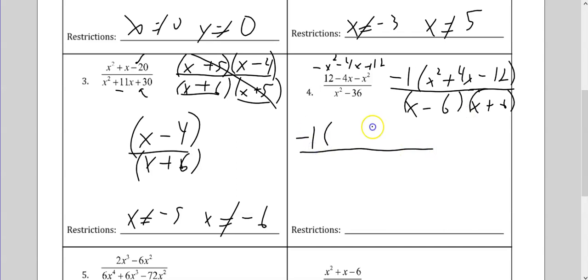My next step is to factor the top. Don't forget the negative 1 here. I need two numbers that multiply to give me 12 that differ by 4 — that's 6 and 2. Since I want more positives, that must be a negative 2. And I have x plus 6, x minus 6 on the bottom.